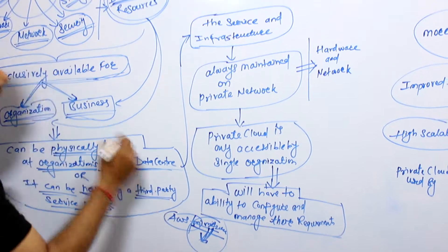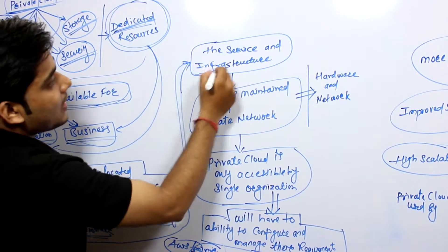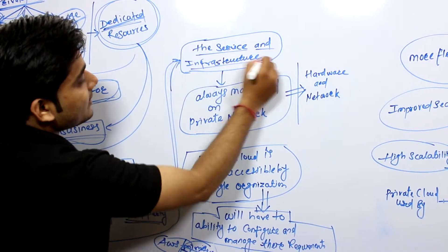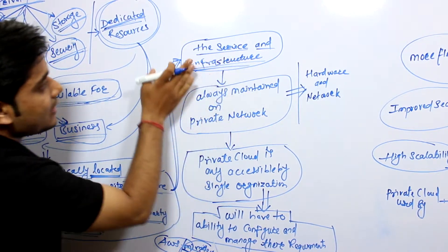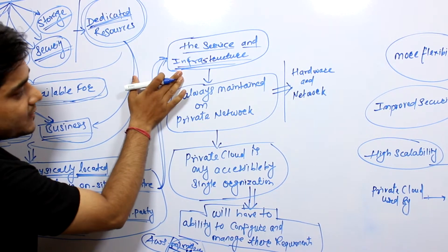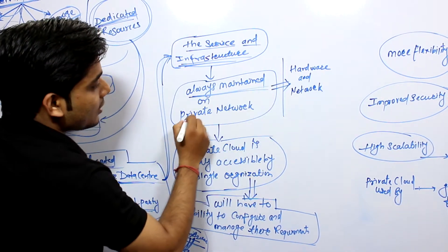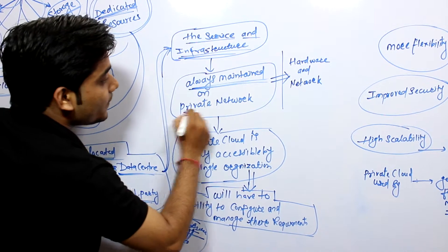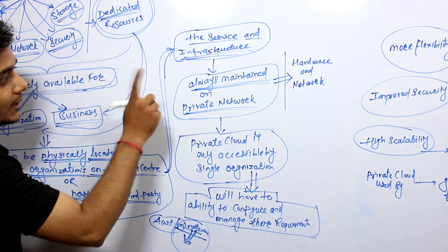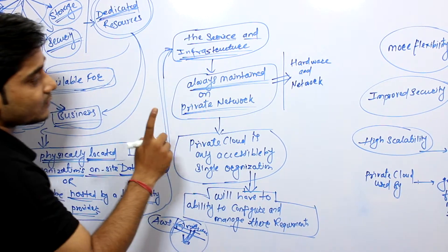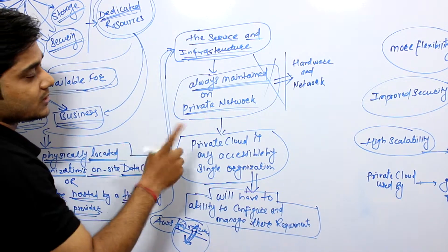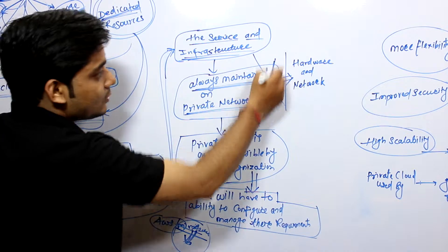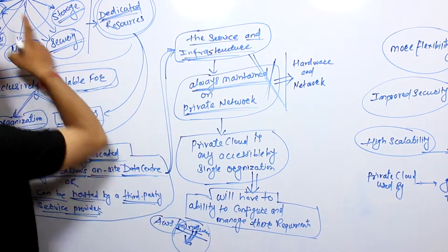The services and infrastructure, that is, their services or infrastructure will be maintained, maintained on the private network. Nobody will have access, nobody will have access at all except those for whom this private cloud service is intended.